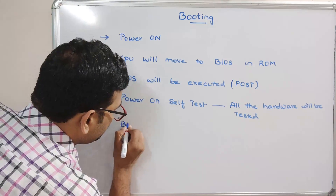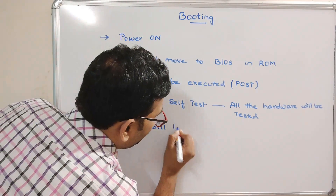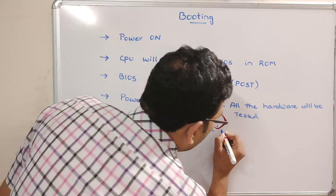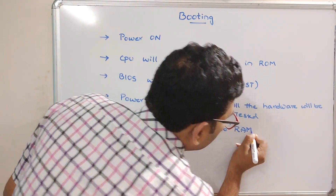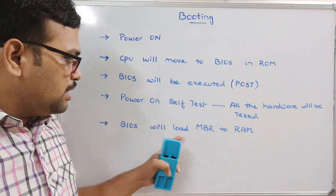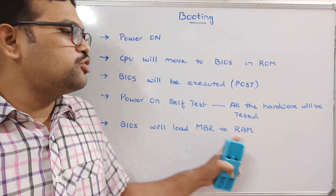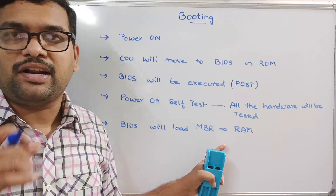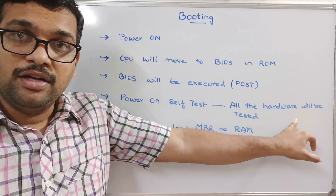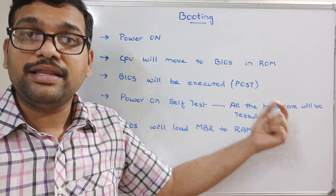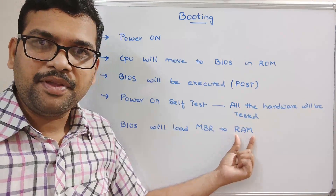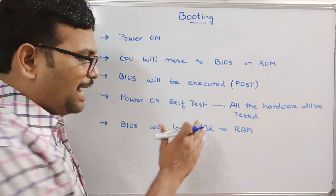After the POST is successful, the BIOS will load the MBR to RAM. RAM is random access memory. MBR stands for Master Boot Record. We were previously checking only the hardware; now after confirming the hardware is in working condition, we need to load the software into RAM, so the MBR is loaded into RAM.